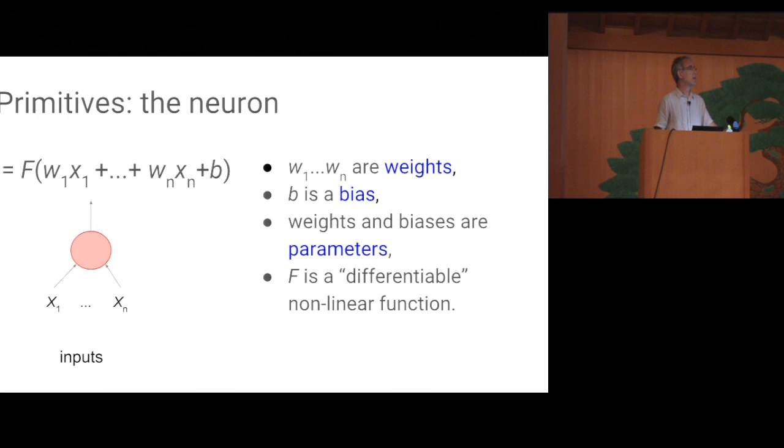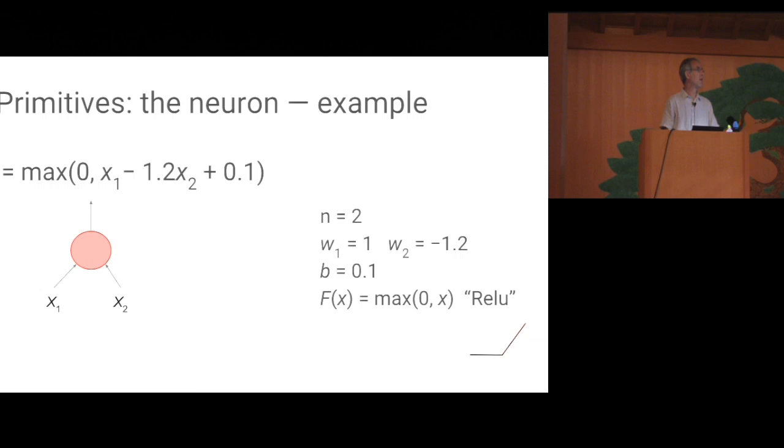The coefficients of the inputs are called weights. The additive term b is called a bias, and the function through which they're passed, this function f is a differentiable nonlinear function. I put differentiable between quotation marks, because in fact, in practice, the functions being used are sometimes not differentiable, they're just mostly differentiable, differentiable almost everywhere, or approximations to that. So for example, f may be such that f of x is the maximum of 0 and x, so that's piecewise differentiable. This is what's called a rectified linear unit, or ReLU, which is a very common term in this field.